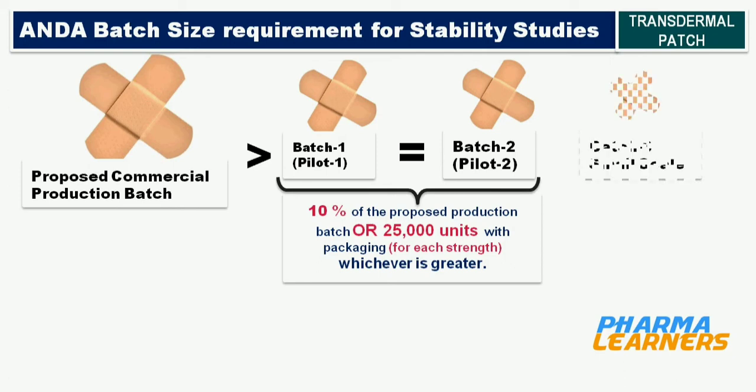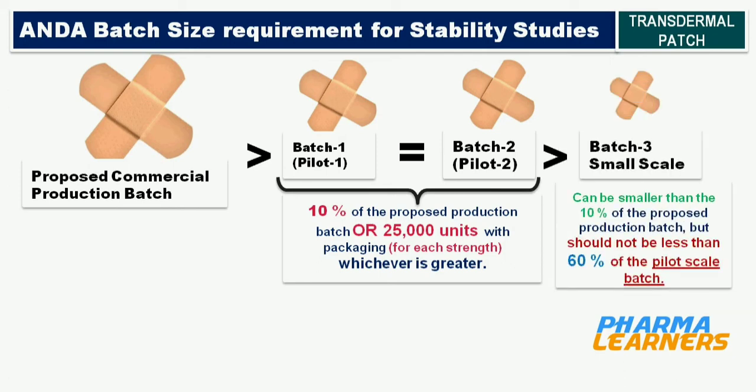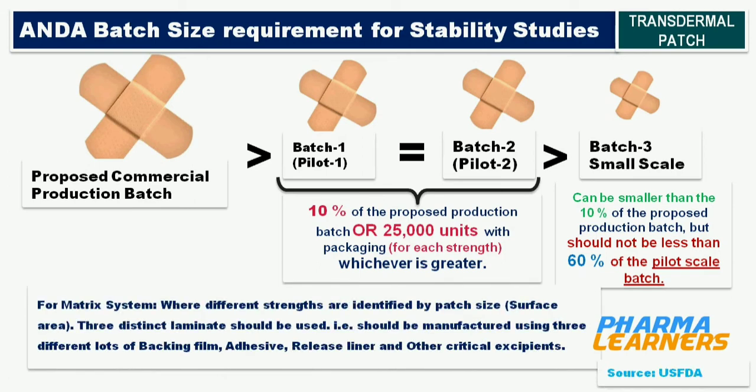The third batch should not be less than 60% of the pilot batch. For matrix systems where different strengths are identified by patch size or surface area, three distinct laminates should be used — that is, manufactured using three different lots of backing film, adhesive, release liner, and other critical excipients.